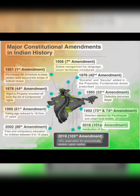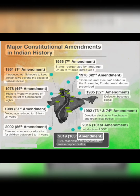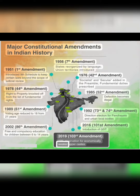2016, 101st Amendment: introduction of GST. 2019, 103rd Amendment: 10% reservation for Economically Weaker Sections among upper castes.